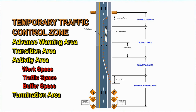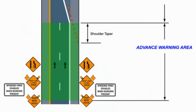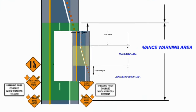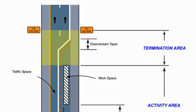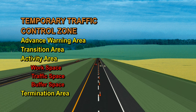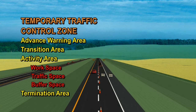The MUTCD describes four components of temporary traffic control zones: the advanced warning area, the transition area, the activity area, and the termination area. Crashes can occur in all of these areas if they are not properly controlled.